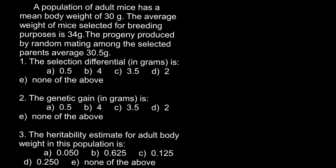Today's problem is: a population of adult mice has a mean body weight of 30 grams. The average weight of mice selected for breeding purposes is 34 grams. The progeny produced by random mating among these selected parents average 30.5 grams.